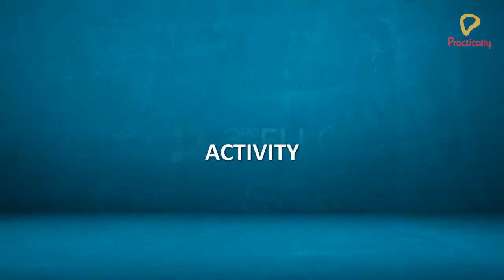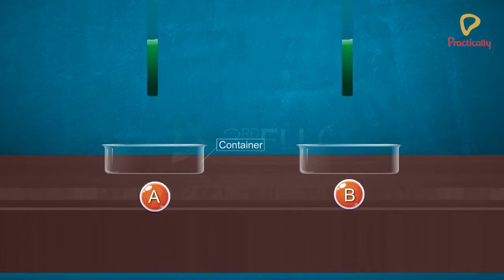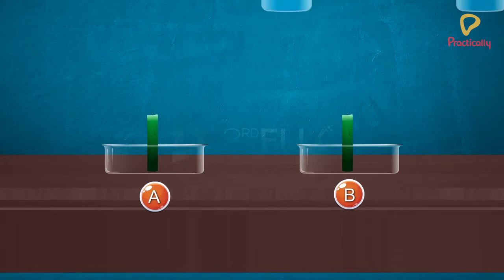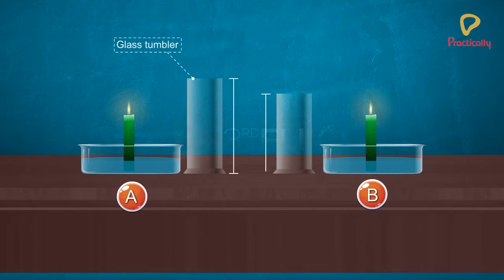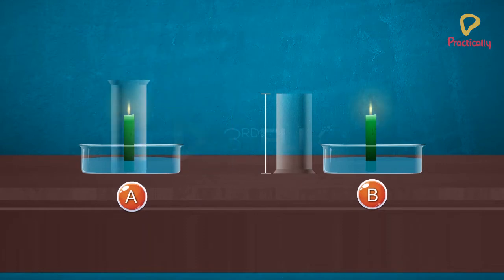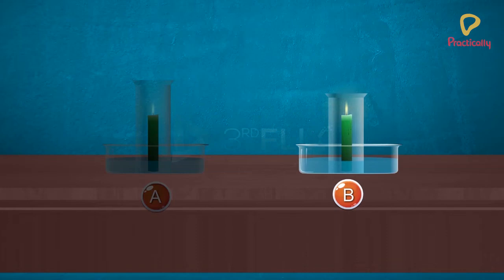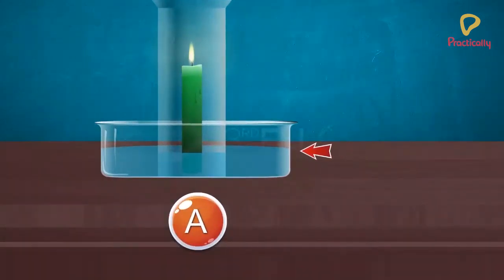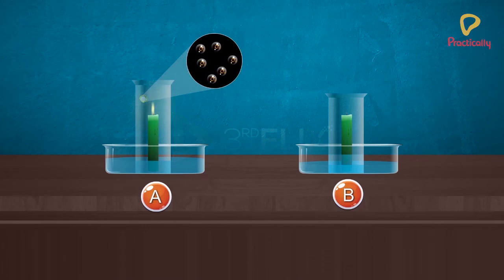Activity. Take two containers and label them A and B. Place a candle in both the containers and fill the containers with some water. Light the candles. Take two glass tumblers of varying height and invert them over the candles. We may observe that the candle placed under the smaller tumbler blows off with an increase in water level inside the tumbler, while the candle in the other tumbler keeps burning. This happens because more oxygen was available in A as compared to B. The rise in water level shows the oxygen used by the burning candle.